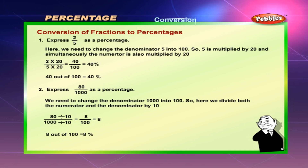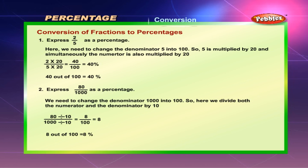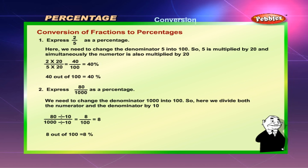Express 80/1000 as a percentage. We need to change the denominator 1000 into 100, so here we divide both the numerator and the denominator by 10. 80 ÷ 10 / 1000 ÷ 10 = 8/100, which is equal to 8%. 8 out of 100 is equal to 8%.